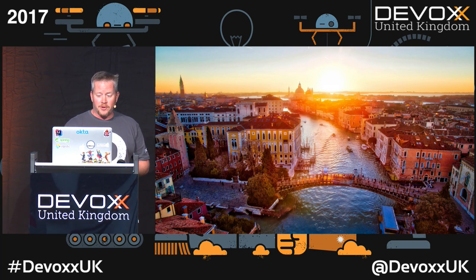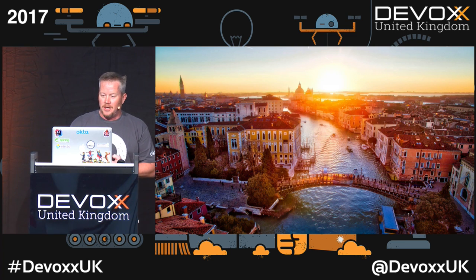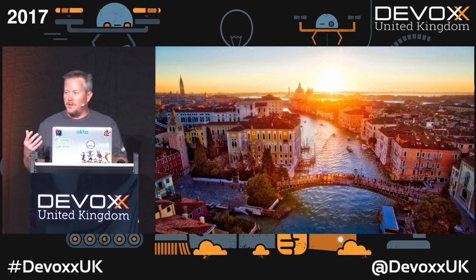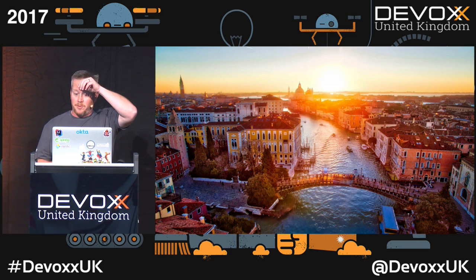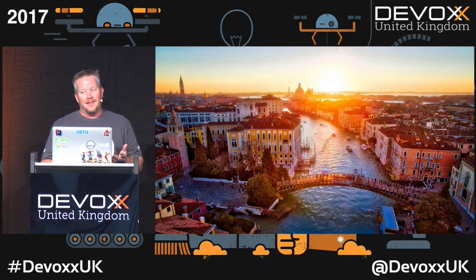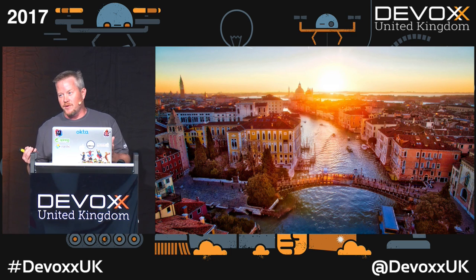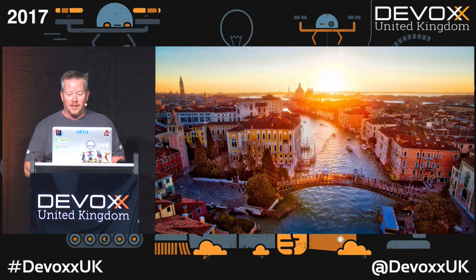So microservices — it's a funny story, it's an interesting history. It was first used as a common architecture term at a workshop of software architects near Venice in May 2011. And in May 2012, the same group decided microservices was a more appropriate name, so they changed it from microservice to microservices — they pluralized it. It took them a year to do that.